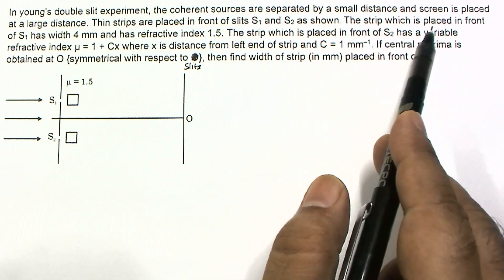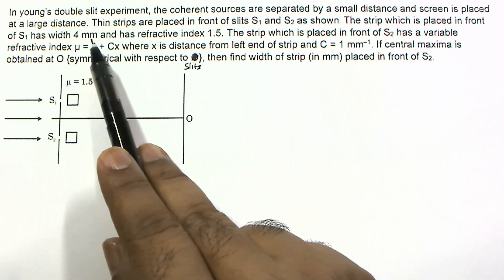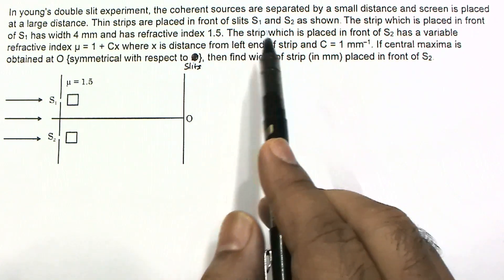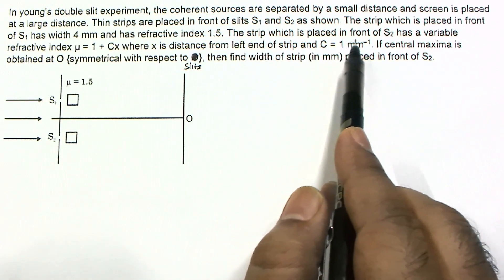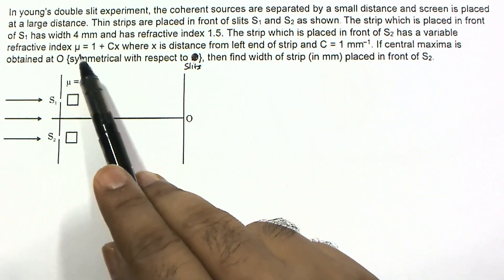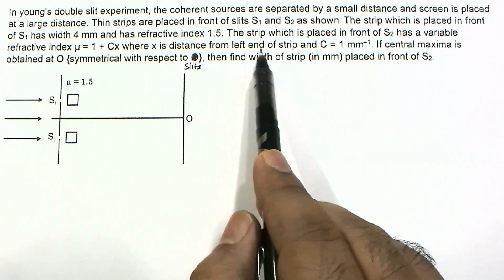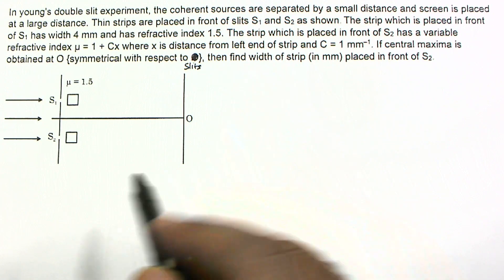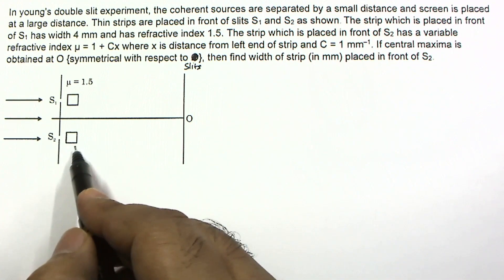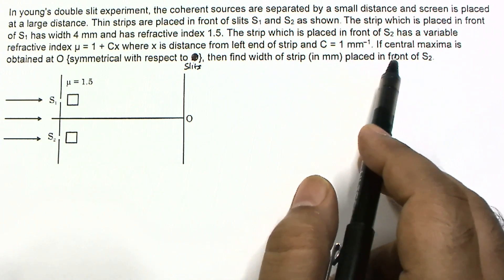The strip placed in front of S1 has width 4 millimeter and has refractive index 1.5. The strip placed in front of S2 has a variable refractive index μ equal to 1 plus cx, where x is the distance from the left end of this strip, and c is equal to 1 per millimeter.